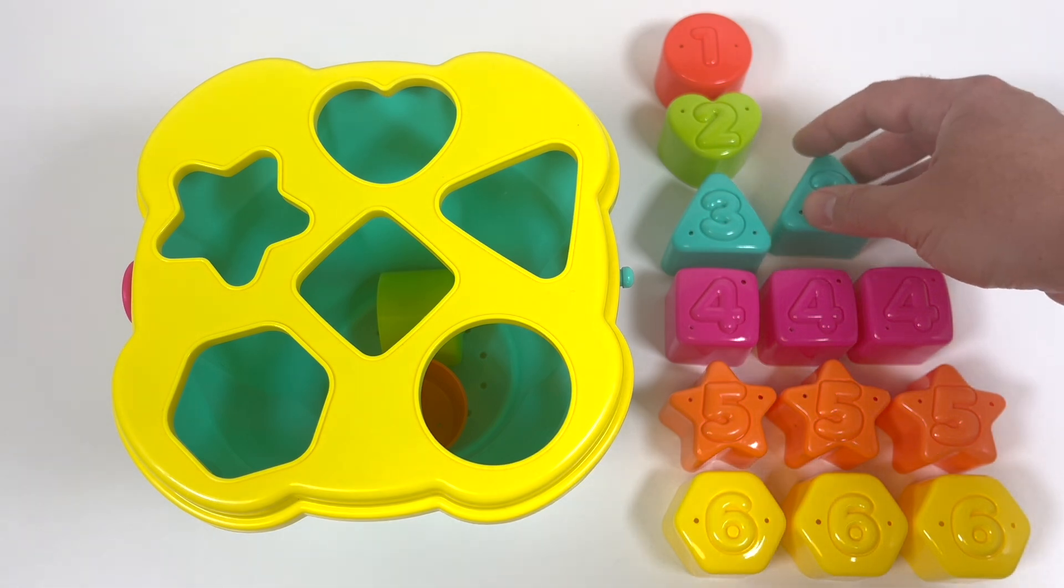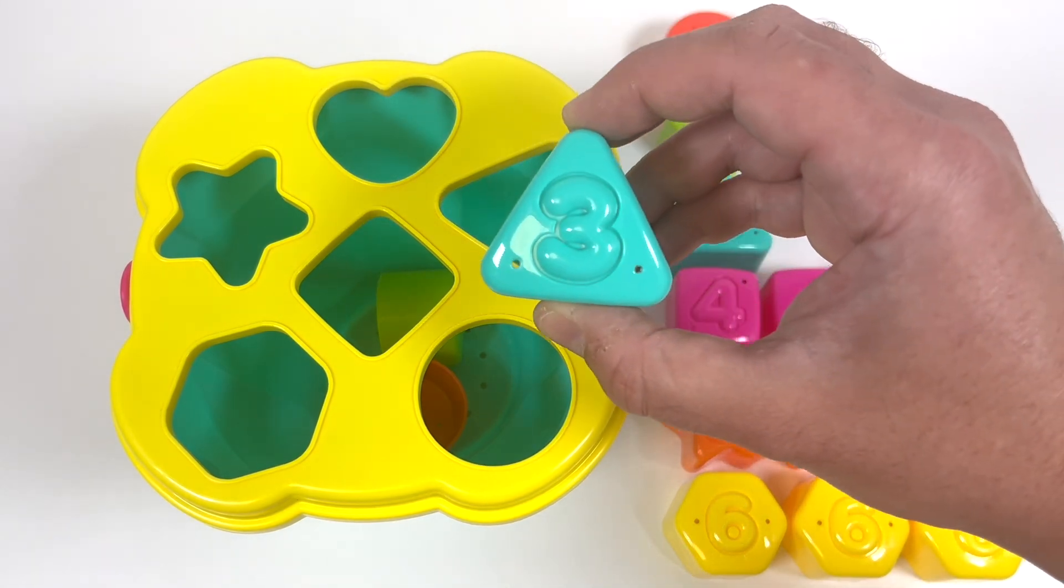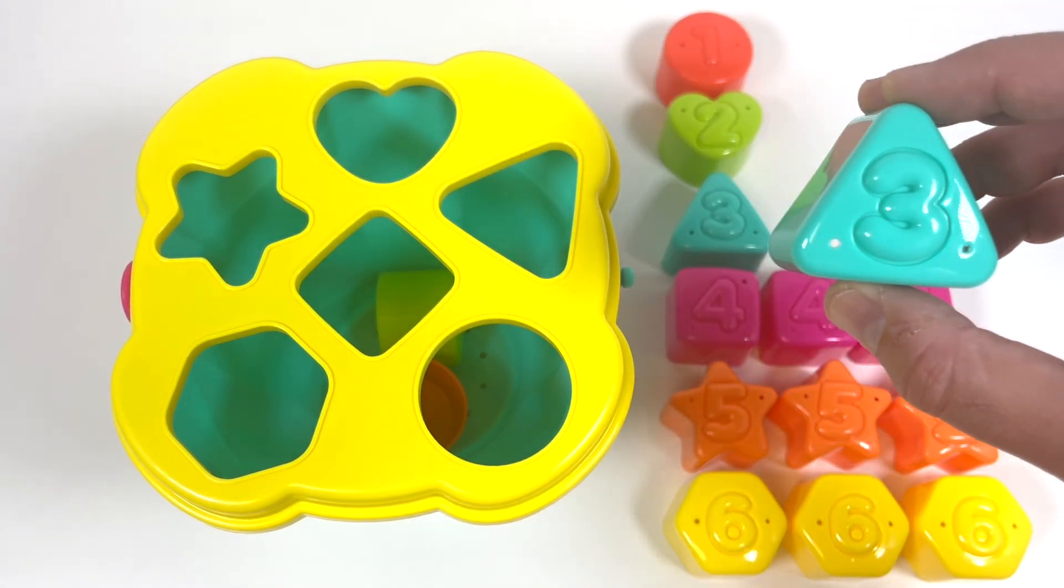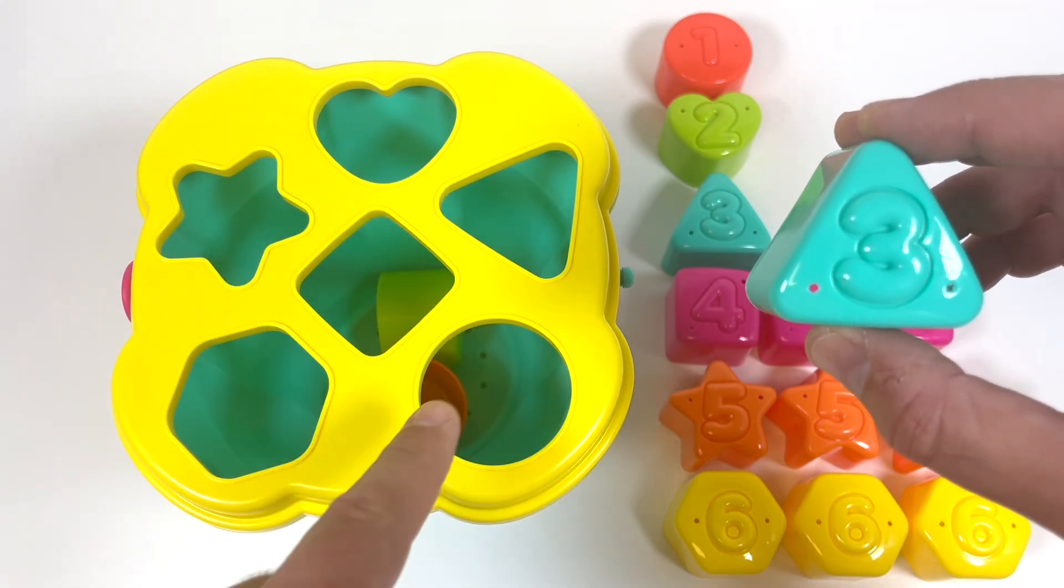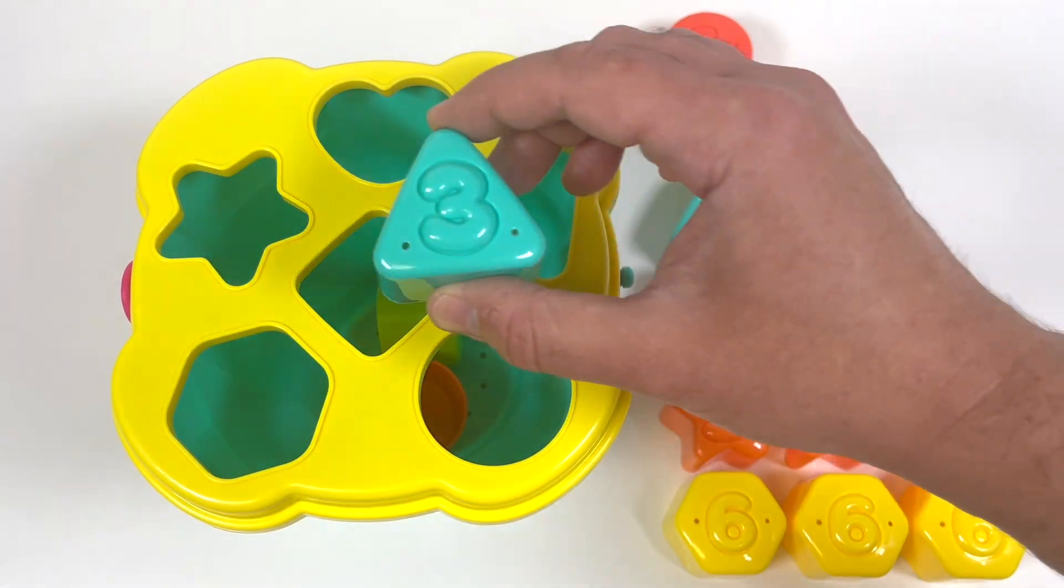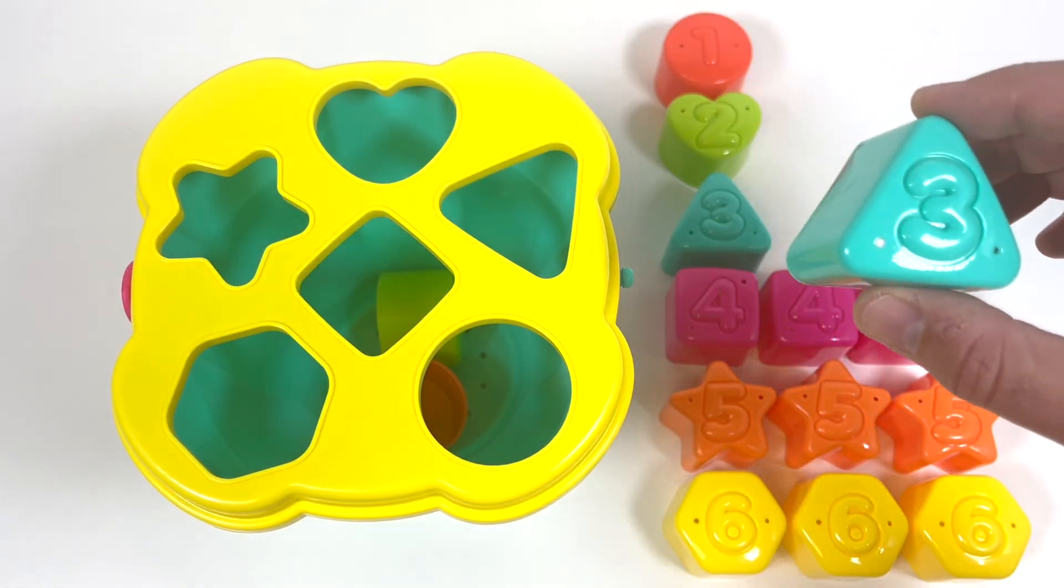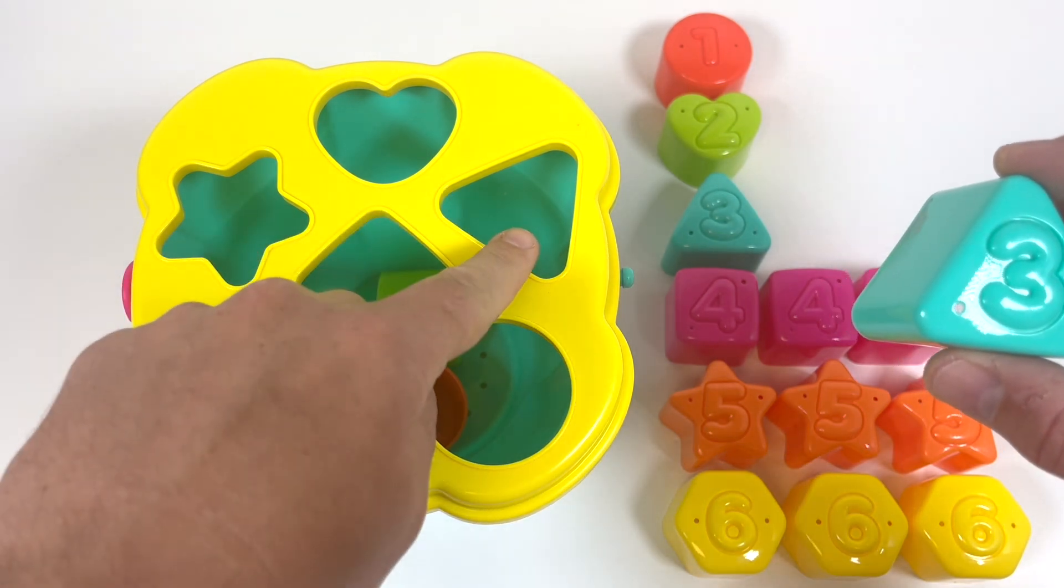Next, let's try the blue triangle, number 3. Can you see a triangle shape? Hmm, maybe this one? No, that's a square. Here's our triangle.